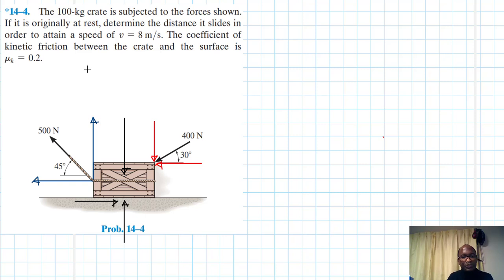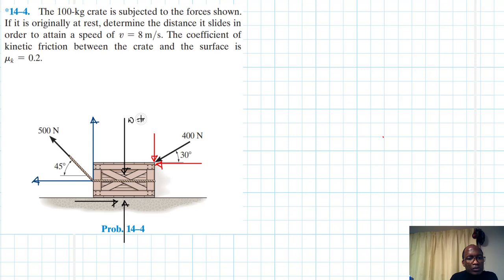We'll have the weight of the box W, which is equal to mg, the normal force N, and friction opposing the direction of motion. The 400 N force gives components: 400 sin 30 (vertical) and 400 cos 30 (horizontal). The normal force N and the kinetic friction equals μk times N.